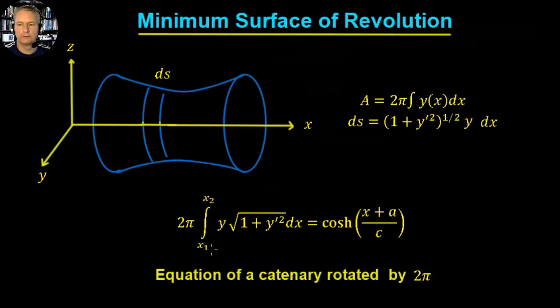So we have the same function as before, but now we have a function of 2π in it as well. So in effect we just get the same value which is the cosh of (x + a)/c, and this here is a catenary.